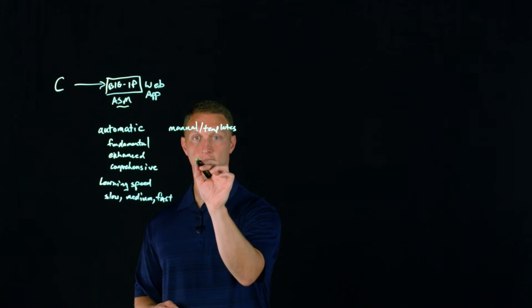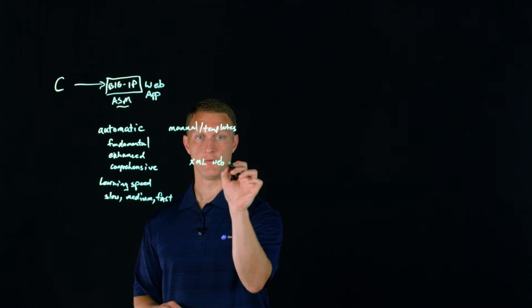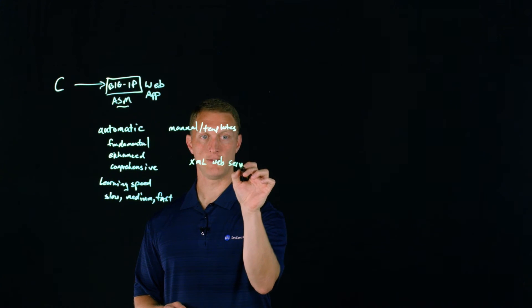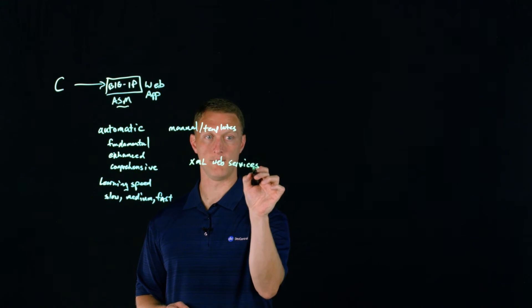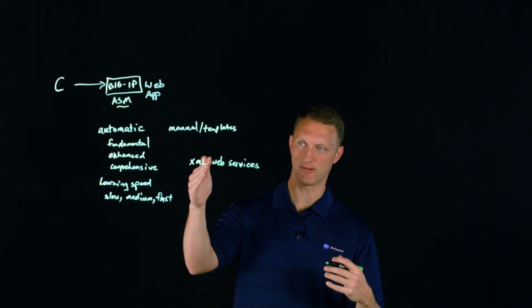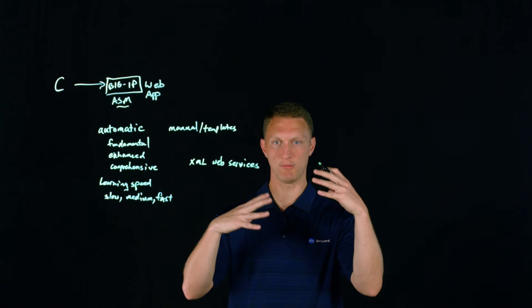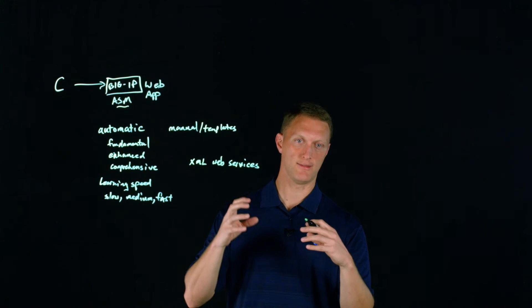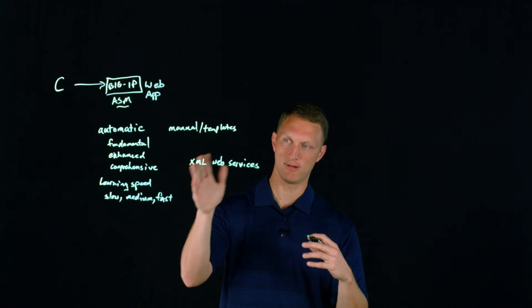Another one is, and I'll just write it right here, XML web services. And this is another manual style way of building out a policy. So you can select this and you basically say, Hey, I want to, I know about my web application. I'm going to use this one.